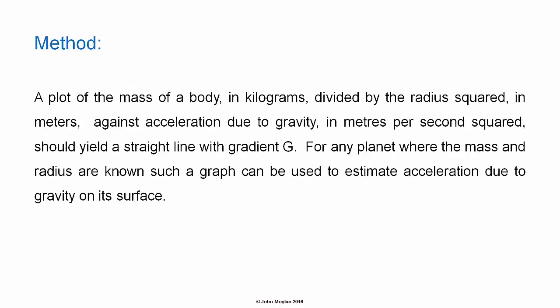Method: if you plot the mass of a body in kilograms divided by the radius squared in meters against acceleration due to gravity in meters per second squared, you should get a straight line with a gradient equal to G, the universal gravitational constant. For any planet where the mass and radius are known you can use this graph to estimate the acceleration due to gravity on the surface of the planet.